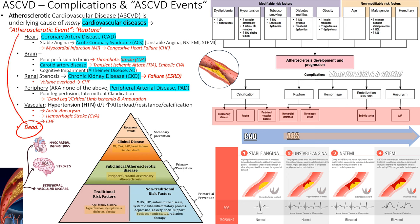Going head-to-toe: erectile dysfunction can actually be an early ASCVD indicator because penile and coronary vessels are the same size. ASCVD in the brain causes ischemic stroke via thrombosis. CAD — coronary artery disease — is a major complication of ASCVD and is the umbrella for stable angina, acute coronary syndrome, and MI.